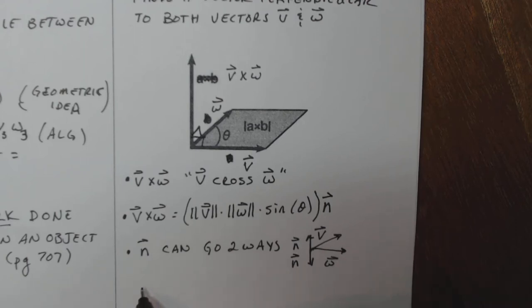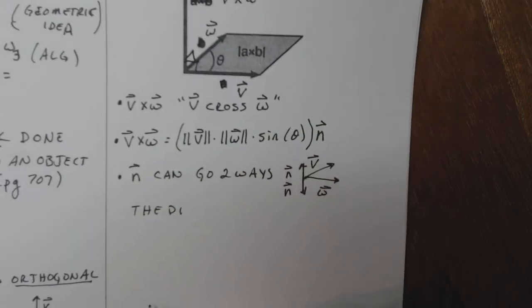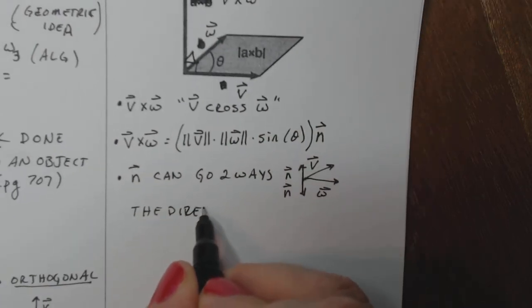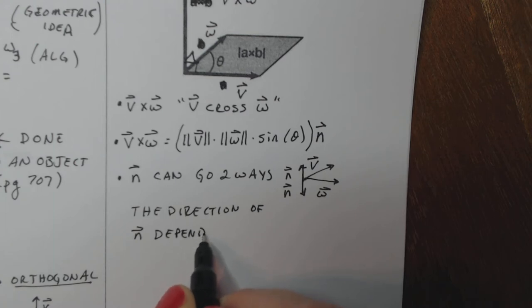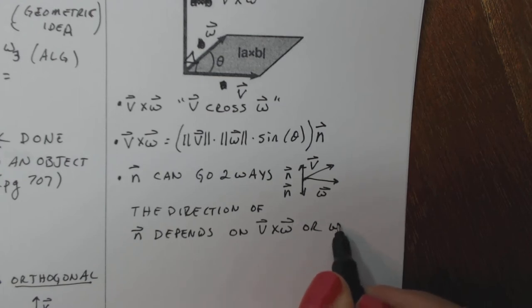So what does it depend on? The direction of N, make sure you can see this, depends on whether we're finding V cross W or W cross V.